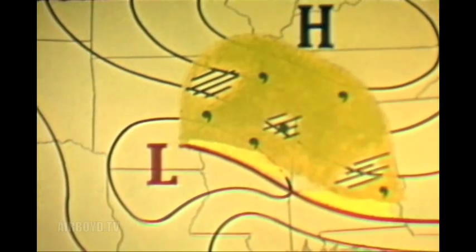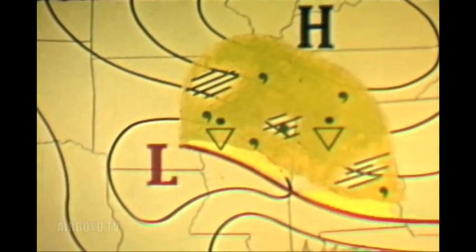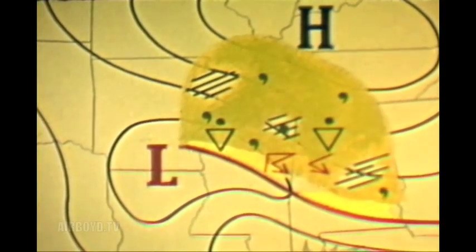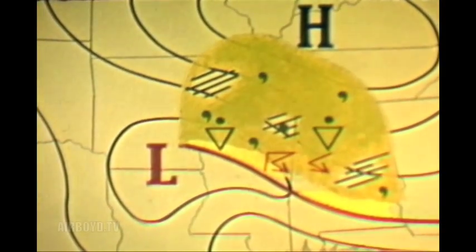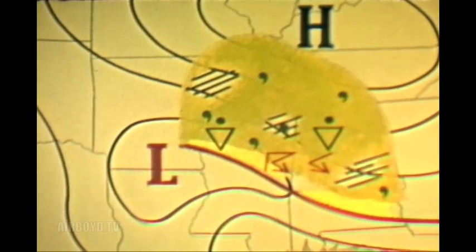When the symbols on the surface weather map indicate showers, thunderstorms, and lightning, embedded storms should be anticipated in the weather area.